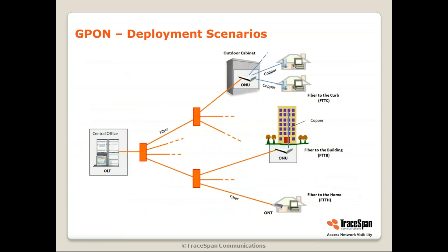In terms of deployment scenarios, G-PON can be deployed in several modes. It can be fiber to the home, where the ONU or ONT is located inside the home. There's also fiber to the building, sometimes called MDU or MTU — multi-dwelling unit or multi-tenant unit — where you have an ONU in a building, usually in the basement, and then copper or coax is used to distribute the service inside the building. And fiber to the curb, or fiber to the cabinet, where fiber goes to an ONU in an outdoor cabinet, and from there copper is used to distribute the services.